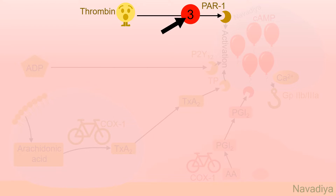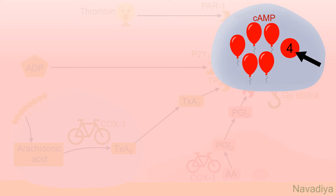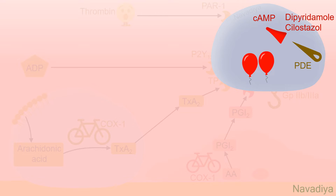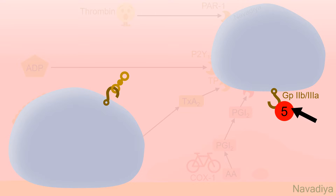Next, inhibitors of protease activated receptor 1. Here we have vorapaxar. It inhibits the effect of thrombin and thus reduces platelet activation. Next, phosphodiesterase inhibitors. Phosphodiesterase is the enzyme that degrades cyclic AMP. We know that a reduced level of cAMP favors platelet aggregation. Drugs like dipyridamole and cilostazol inhibit the phosphodiesterase enzyme, so cAMP level stays high which prevents platelet aggregation.